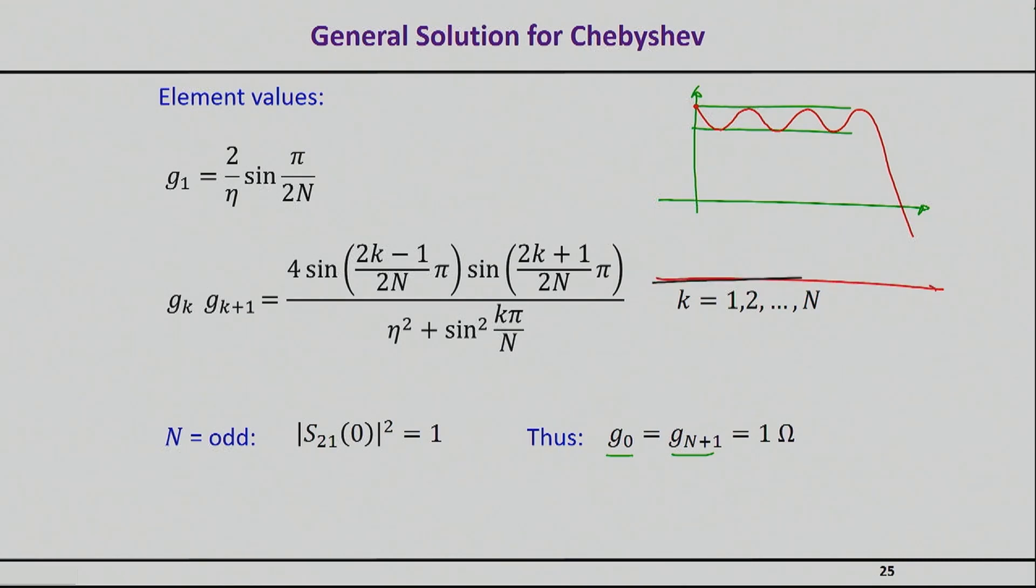And I'll do another example here, showing only the passband. You may have something like this. In other words, you can start from 1 or you might start from less than 1, which will be the ripple.